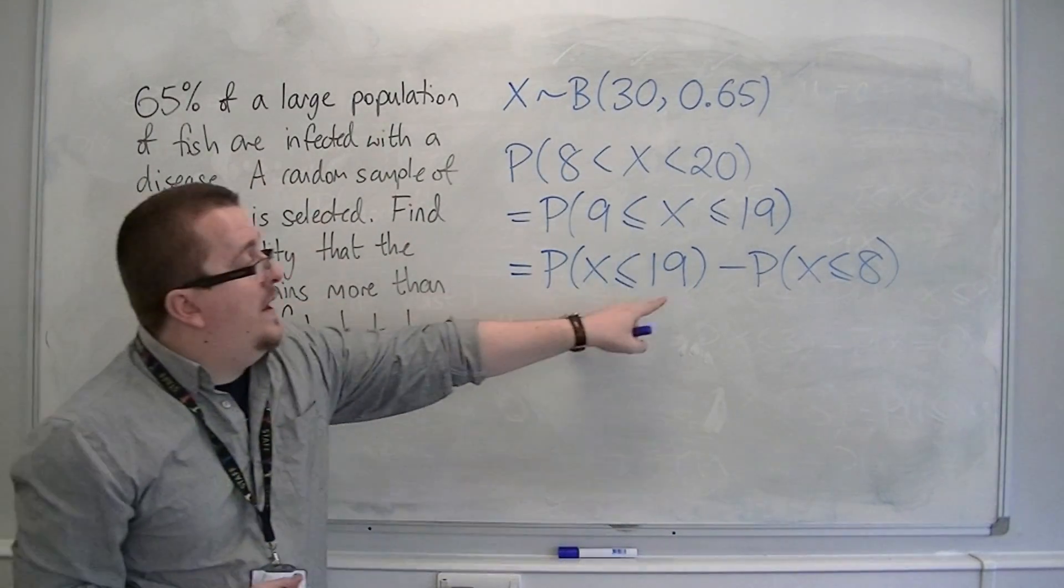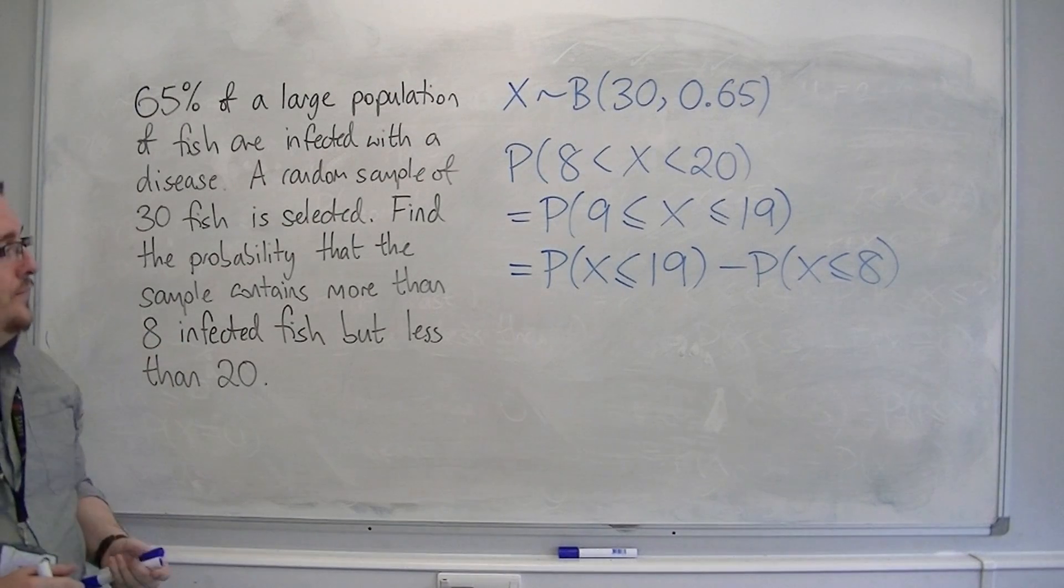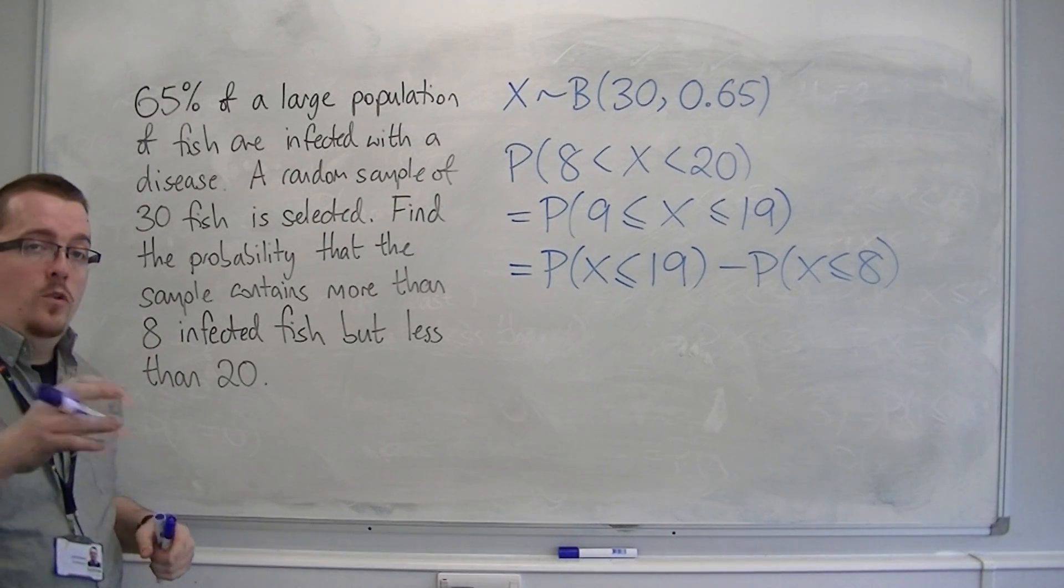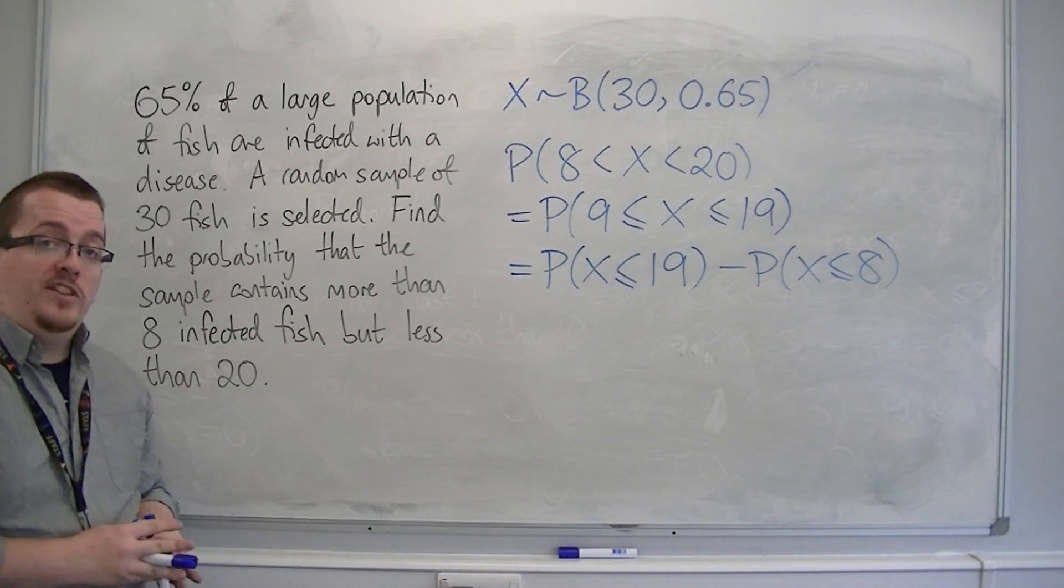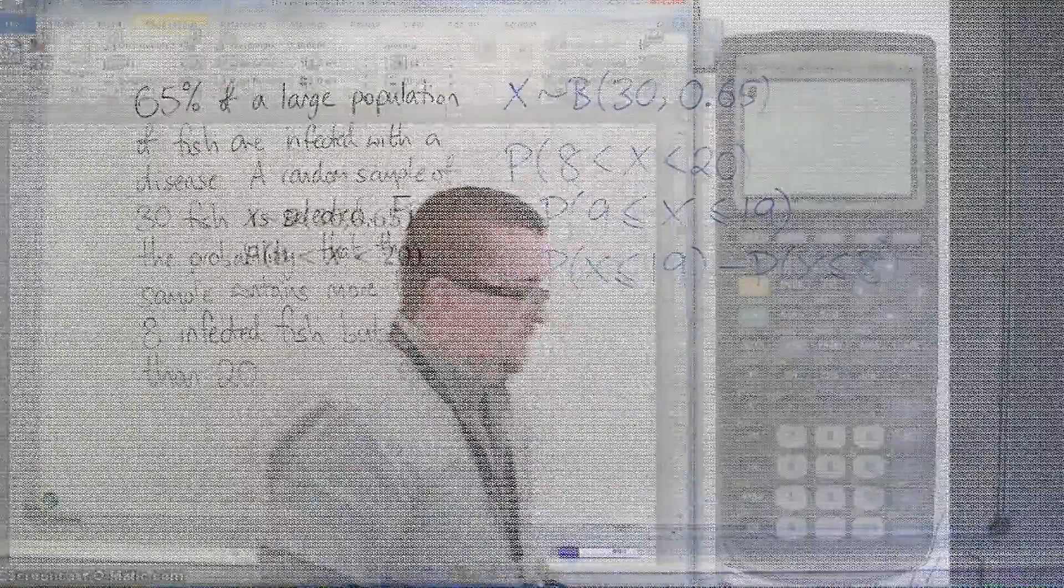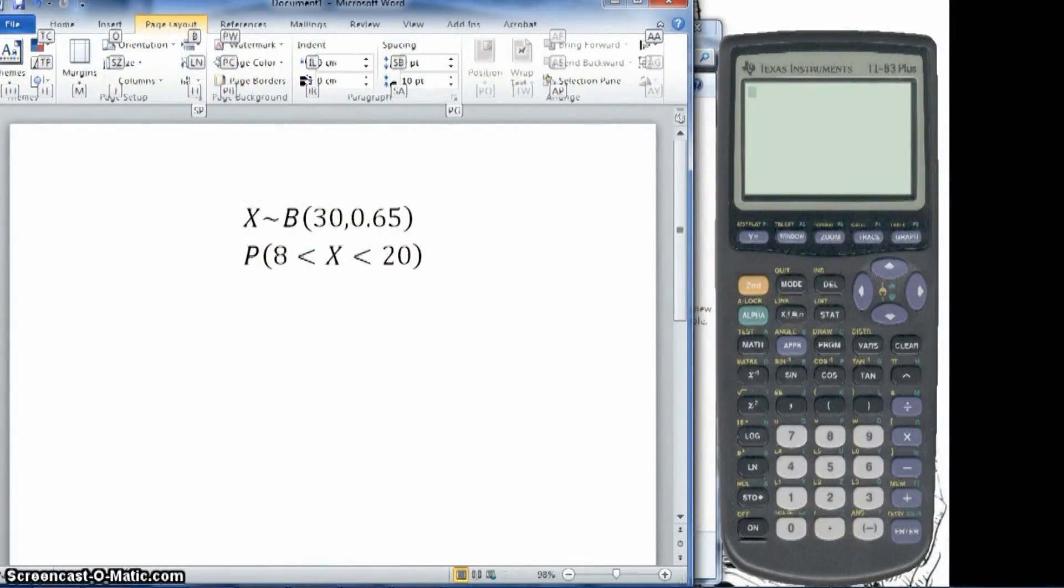Now, you can do this using the tables, or as I'm going to show, I'm going to do it using the TI-82 stats. So we want to use the TI-82 stats to quickly be able to do a binomial distribution, where in this case we have N is 30 and P is 0.65.